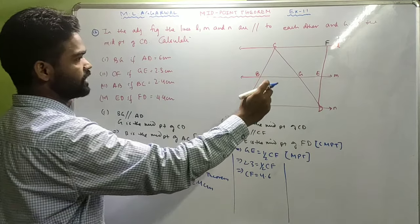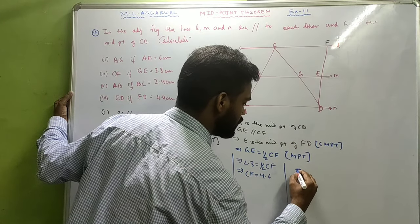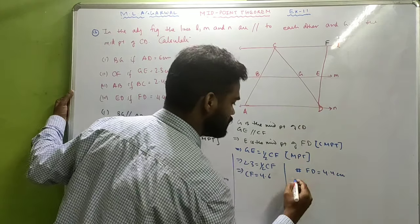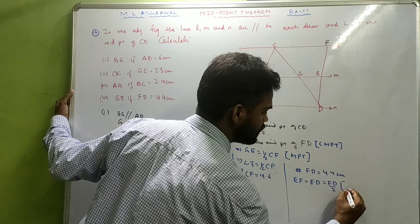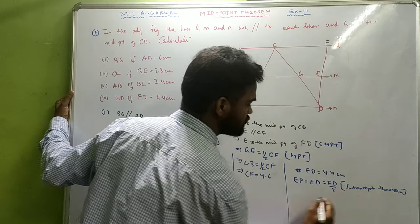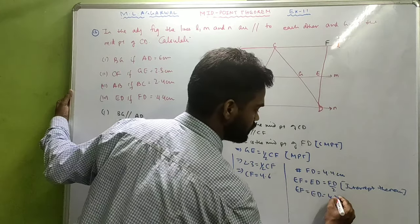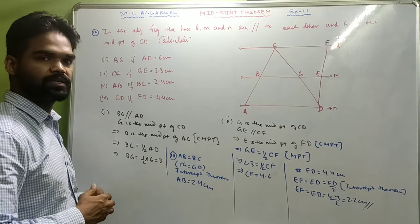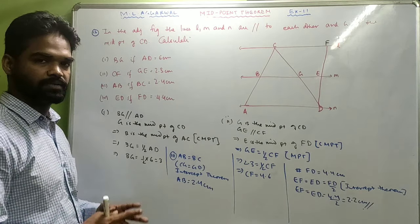Find ED if FD equals 4.4. By the intercept theorem, EF equals ED equals FD divided by 2. So ED equals 4.4 divided by 2 equals 2.2 centimeters. This was the last sum. In the next video we'll see another chapter. Till then, take care. Thank you.